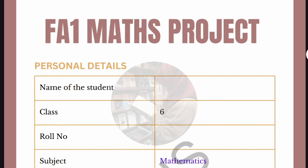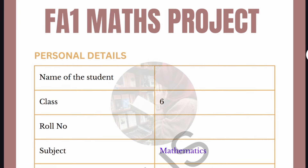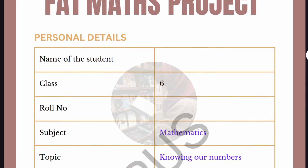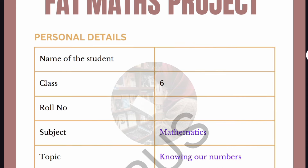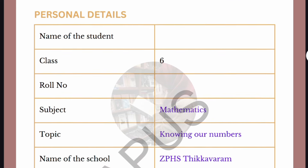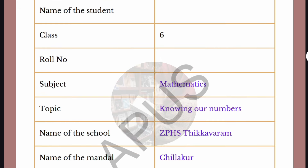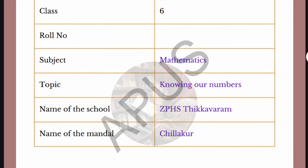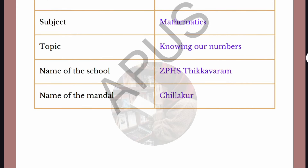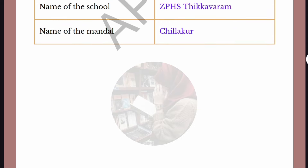First of all, you have to write down the personal details: your name, then class which is Sixth Class, after that roll number, then subject which is of course Mathematics, and the title is 'Knowing Our Numbers'. This is our topic. Next, write the name of your school.